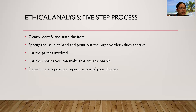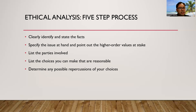Fourth process is to list the choices you can make that are reasonable. It's possible that no alternative will fulfill every interest, but some options perform better than others. The last step is to determine any possible repercussions of your choices. Although may be morally sound, certain decisions can be terrible from another perspective. Other options might be effective in one situation but fail in another comparable situation. Always consider: what if I regularly chose this option over time?